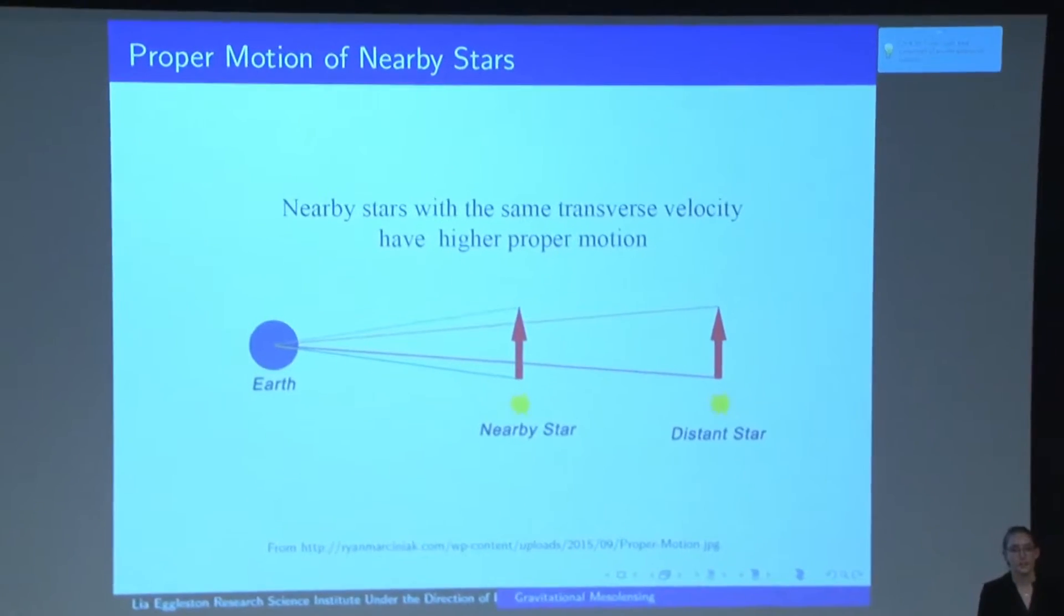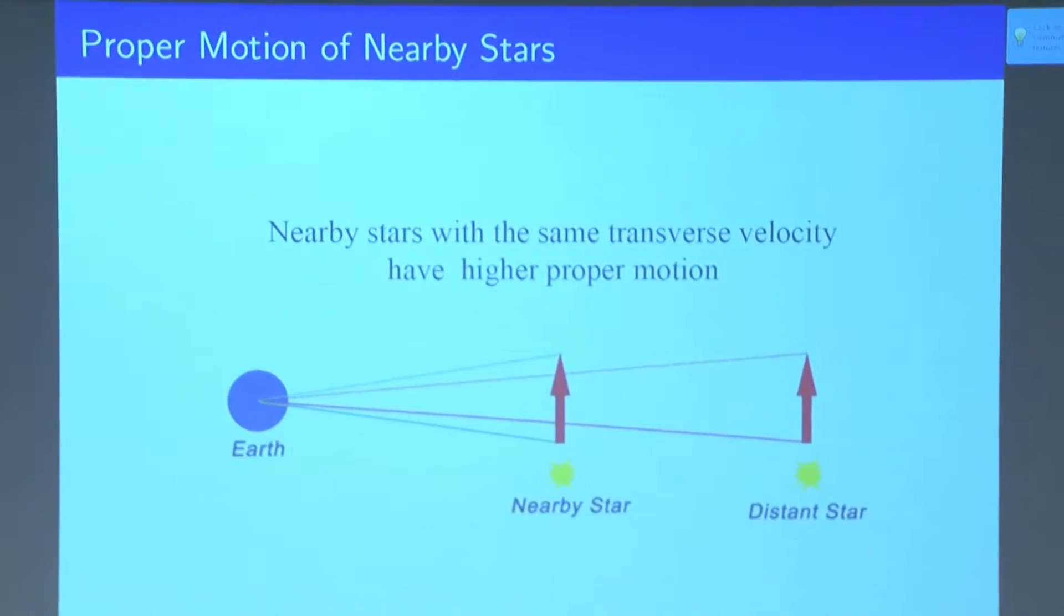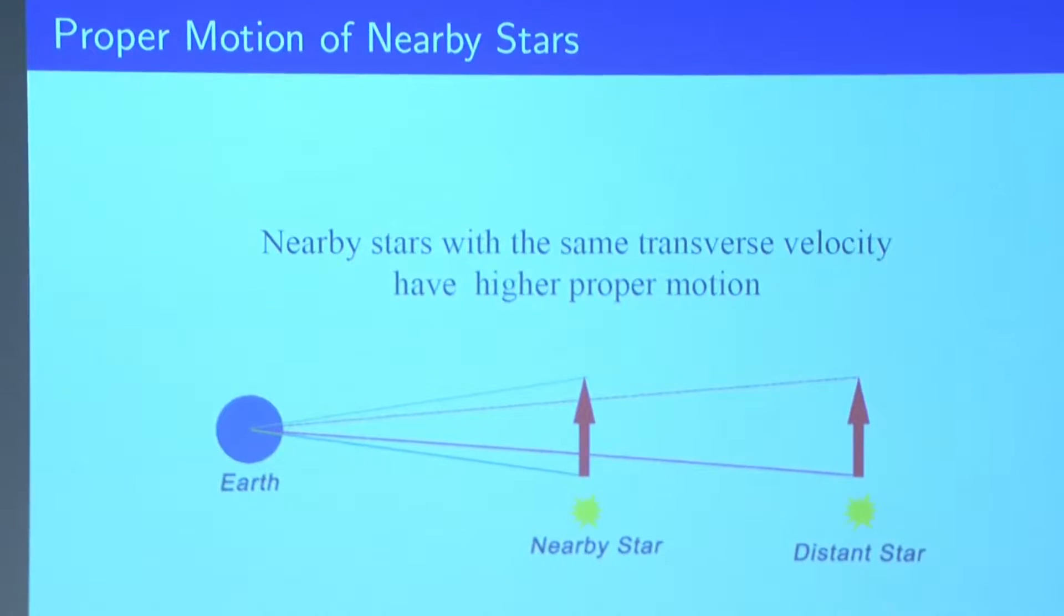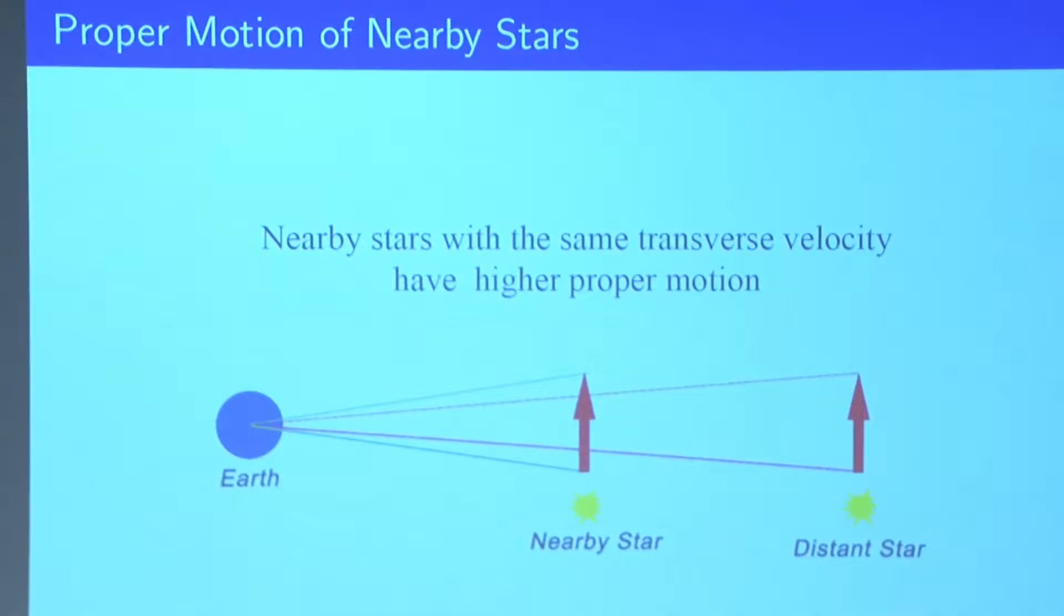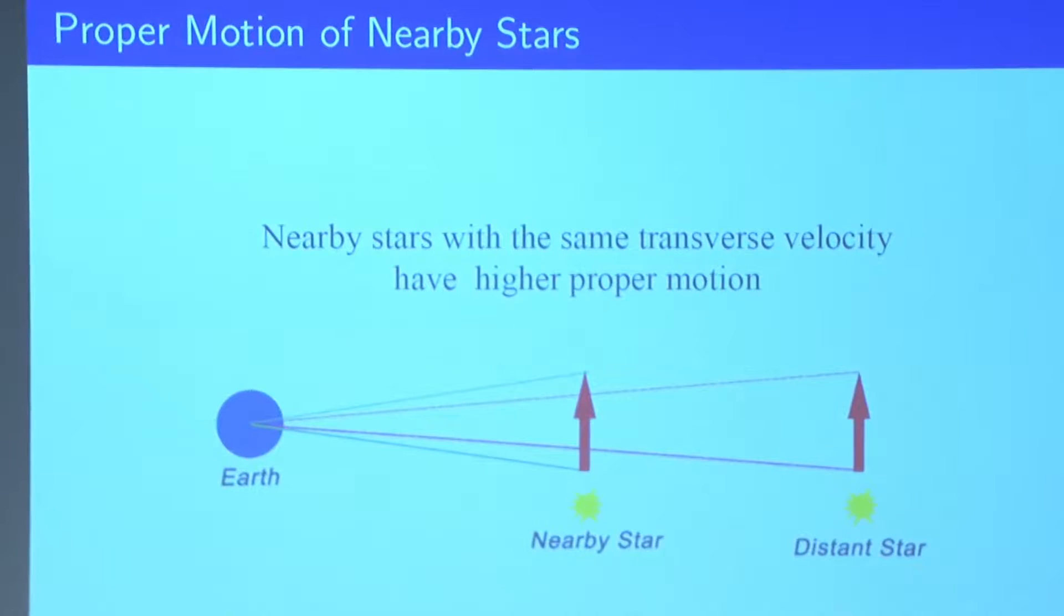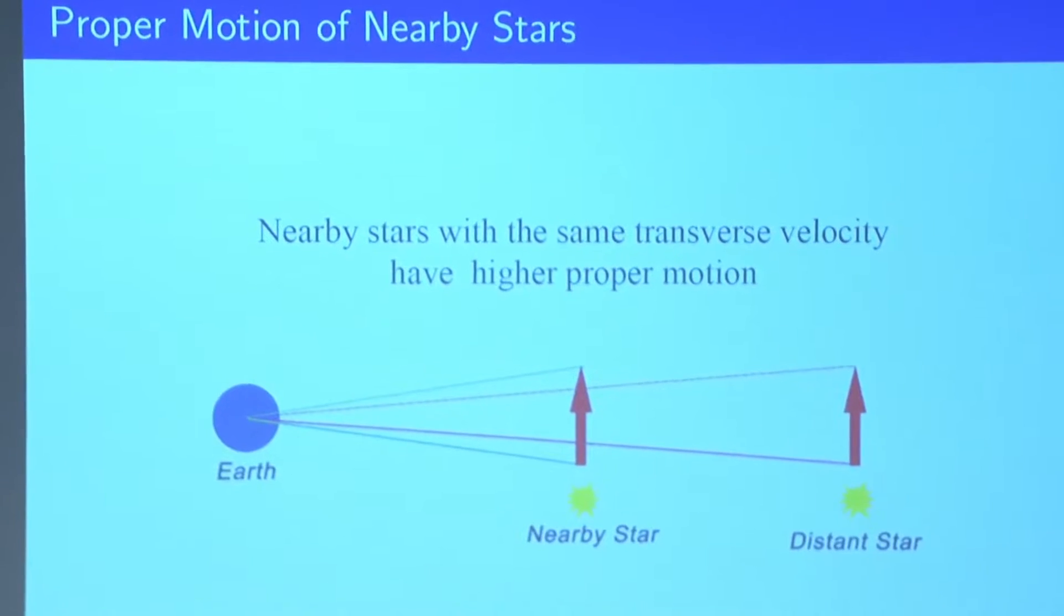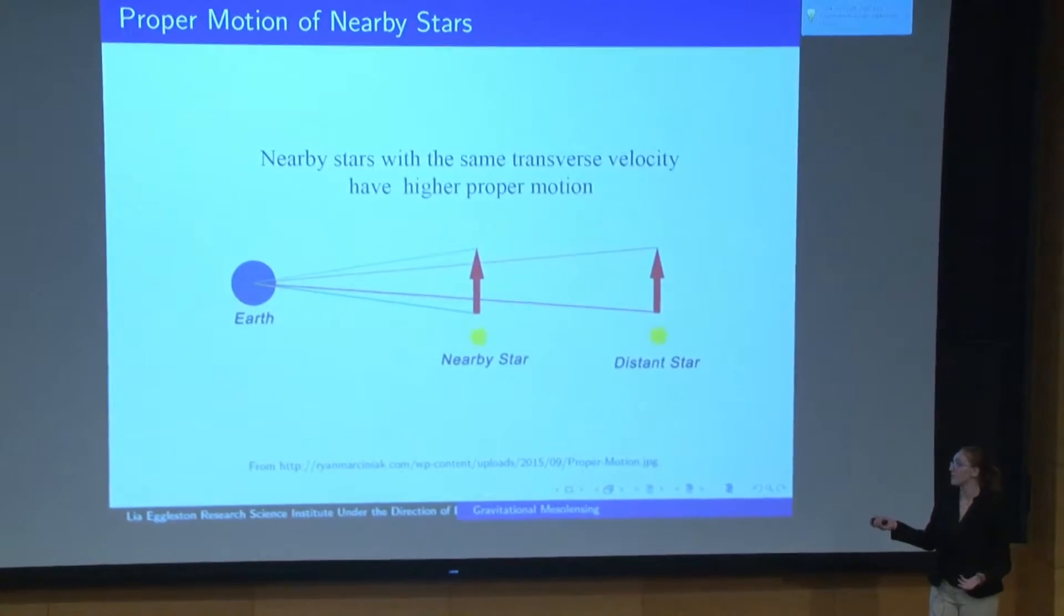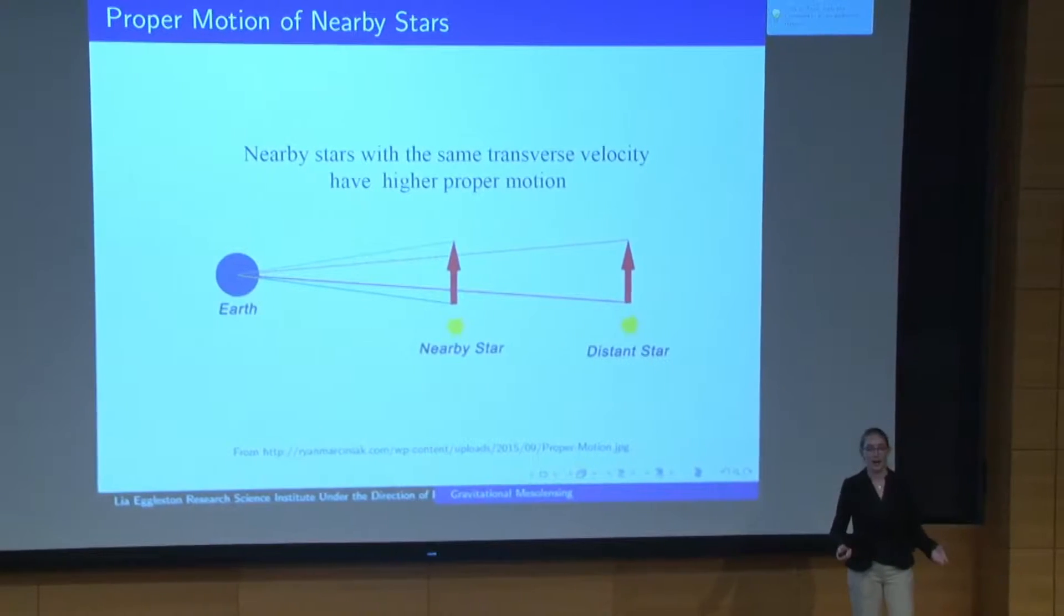So one characteristic that we're looking for in a mesolensing event is association with a high proper motion star. So proper motion is essentially how fast an object is moving on the night sky. And now if you have a nearby star, it's going to appear to move more quickly than if you have a more distant star, even if they're moving at the same true transverse velocity. So when we're looking for nearby lenses, we also want to look for stars that are essentially moving quicker across the sky, because that's more likely to be a nearby lens associated with a mesolensing event.